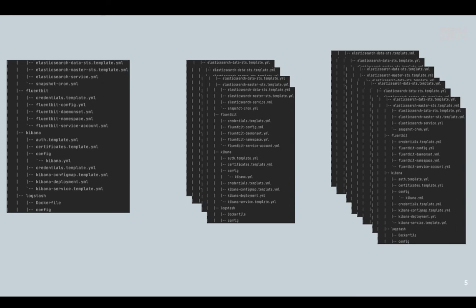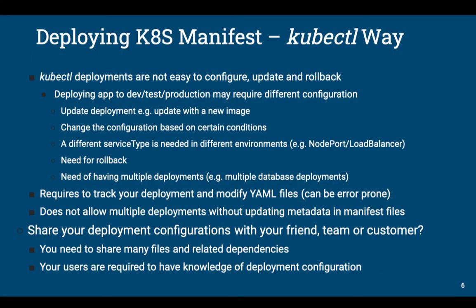The entire files remain the same. Deploying Kubernetes manifests the kubectl way is tough because deployments are not easy to configure — you need update and rollback capabilities, and you need to deploy to multiple environments. If you don't want to create multiple files, you'd use some sort of manipulator — yq, jsonnet, or YAML configurations — to manipulate config per environment. You also have to track your deployment and modify YAML every time anything changes, and it doesn't allow multiple deployments without updating the metadata.